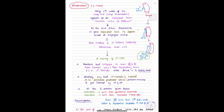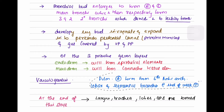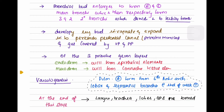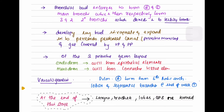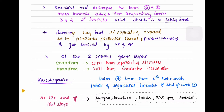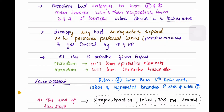Of the three primitive germ layers, the endoderm will form epithelial elements and the mesoderm will form connective tissue elements. The pulmonary artery forms from the sixth aortic arch, and lower and segmental branches are developed at the end of week seven. At the end of the embryonic stage, the larynx, trachea, lobes, and bronchopulmonary segments are formed.